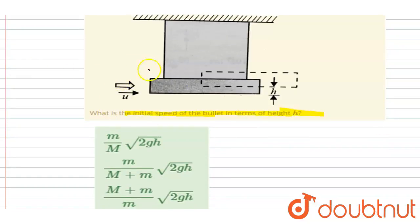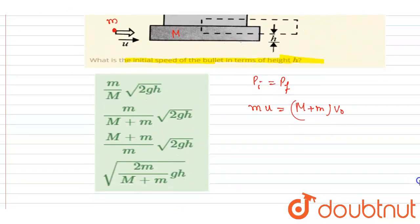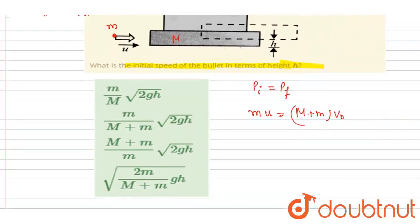Before the collision, the bullet has mass small m and was moving with velocity u, so I write mu. After the collision, they both move with velocity v₀. Since there is no external force, I write mu equals (M + m) times v₀. So you get v₀. Now you can calculate v₀